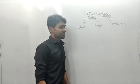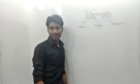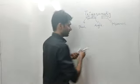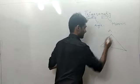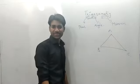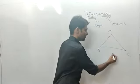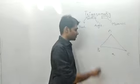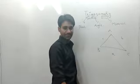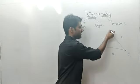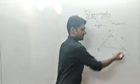So, measurement of angles of a triangle. First, let us know some things about triangles. If we consider a triangle ABC, this angle will be capital A, this is capital B, and this is capital C.